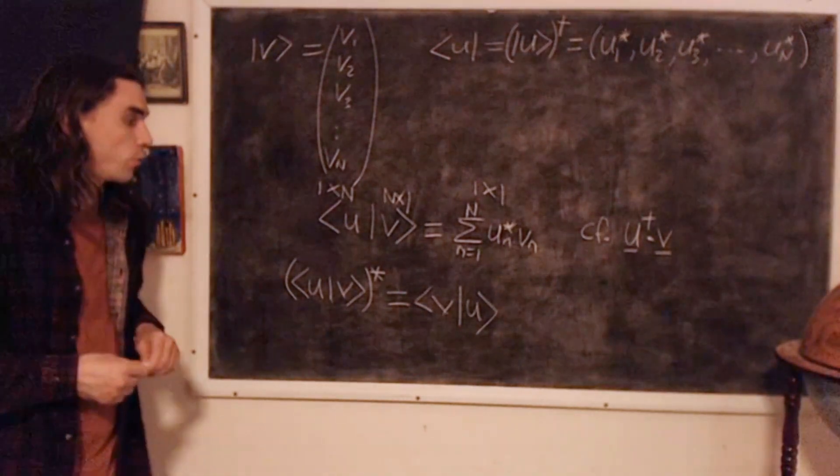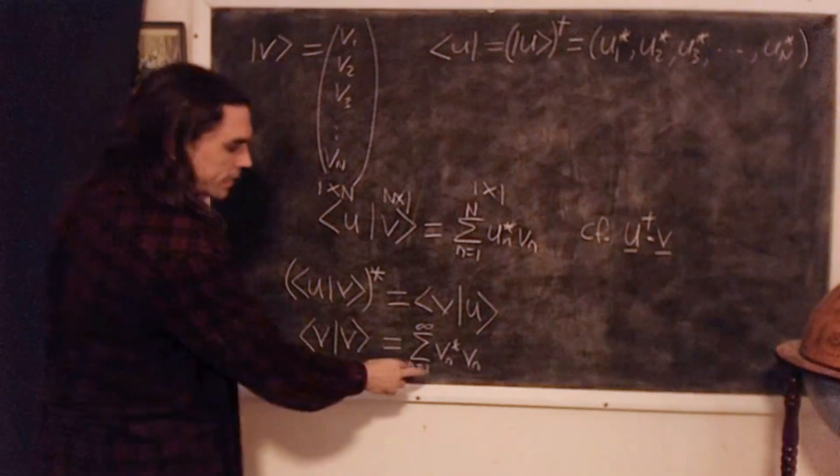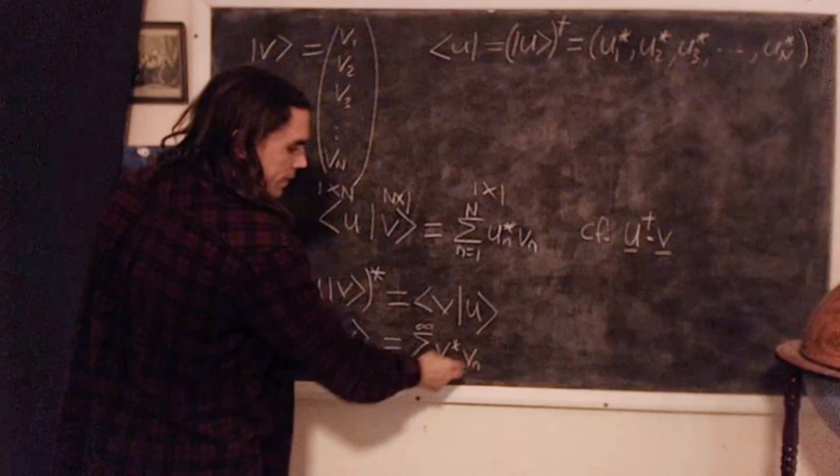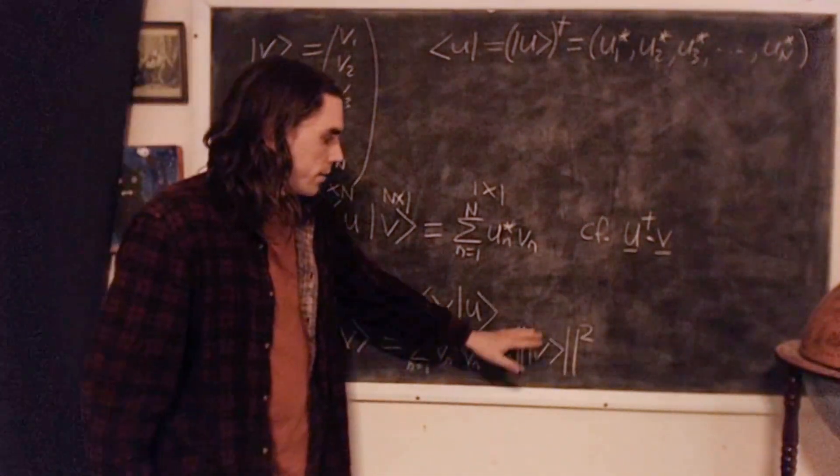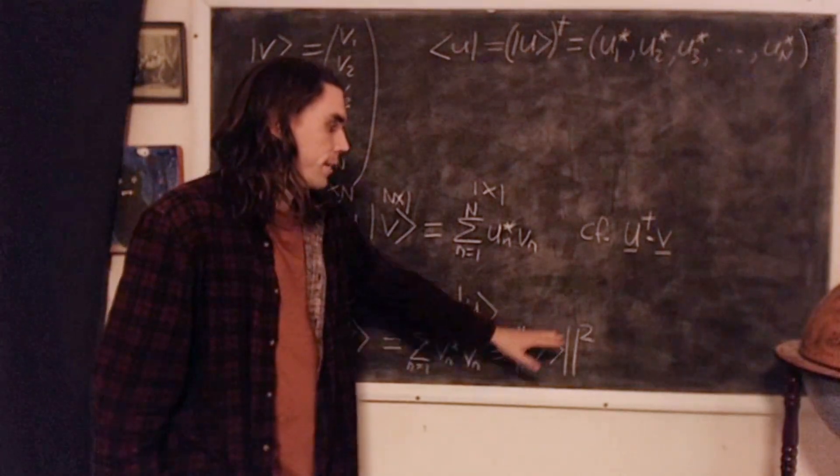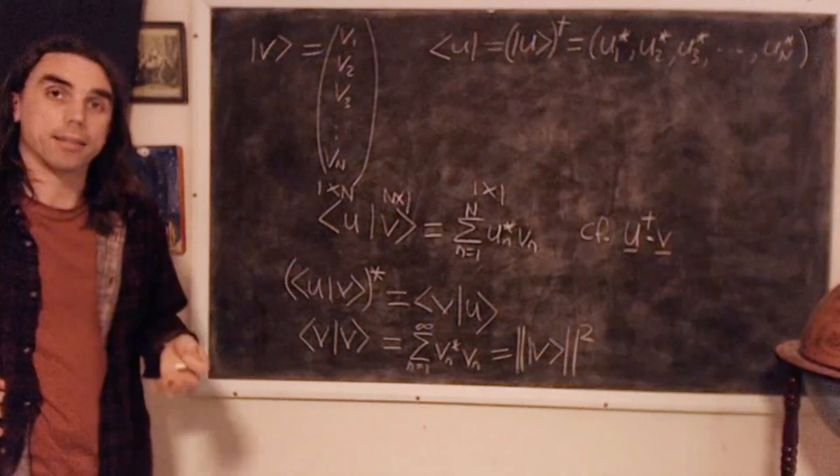This also tells us that if we take the inner product of v with itself, we must get the sum over vn star vn, and that's nothing other than we just get the norm of the vector v squared, where norm is just a slight generalization on the length of the vector.